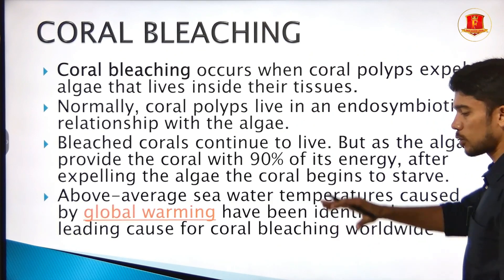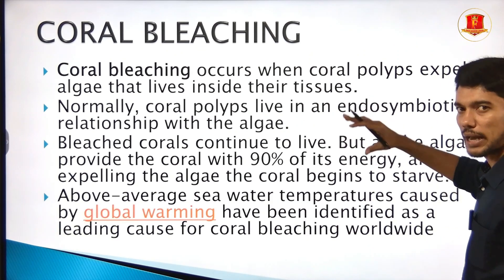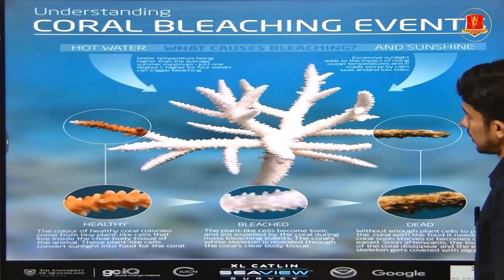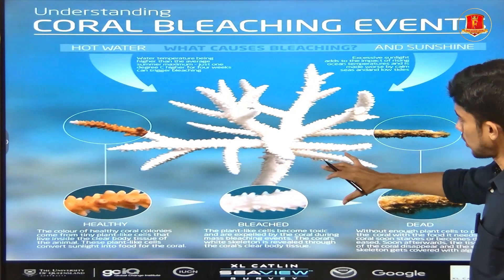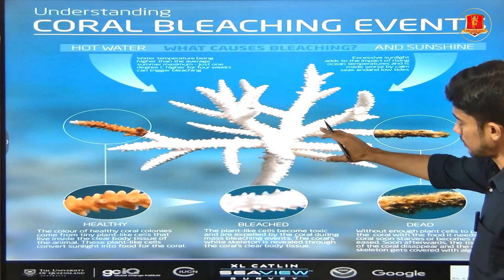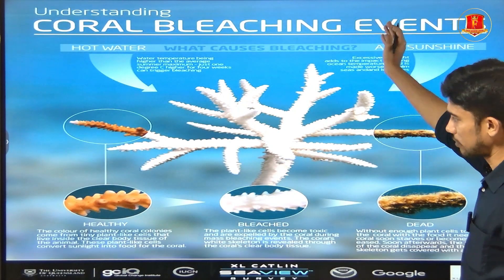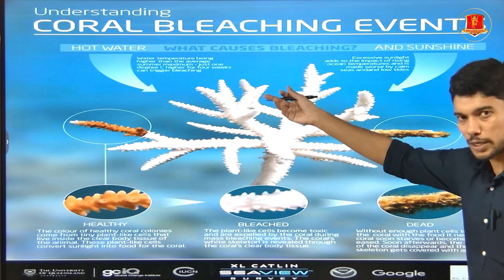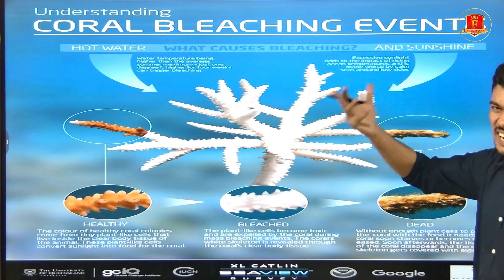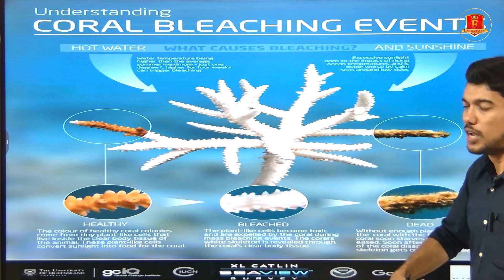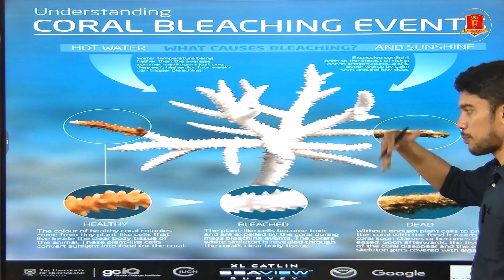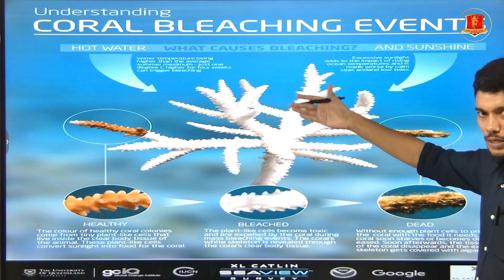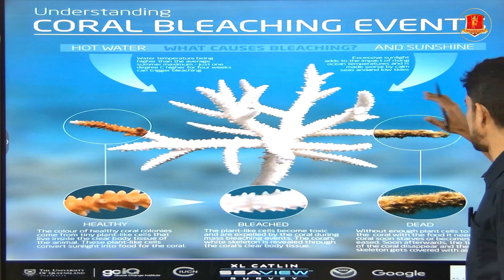Coral bleaching occurs when the algae is expelled from the coral polyps, leaving the coral exposed. When the algae leaves, the coral polyps lose their color and the bleaching effect takes place, severely damaging the reef.